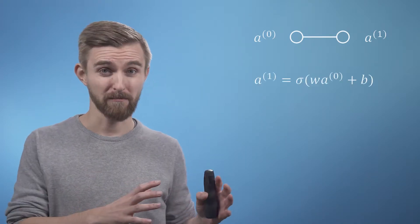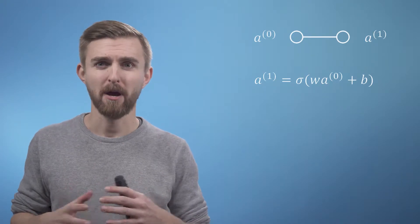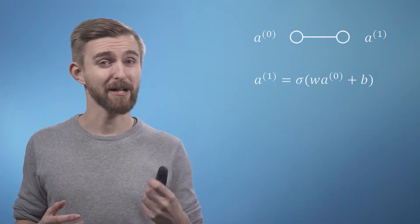Let's now have a look at the simplest possible case so that we can translate these diagrams into some formulae. Here we have a network which takes in a single scalar variable which we'll call a0 and returns another scalar a1. We can write this function down as follows: a1 equals sigma of w times a0 plus b, where b and w are just numbers but sigma is itself a function.